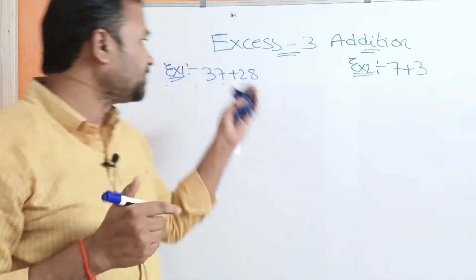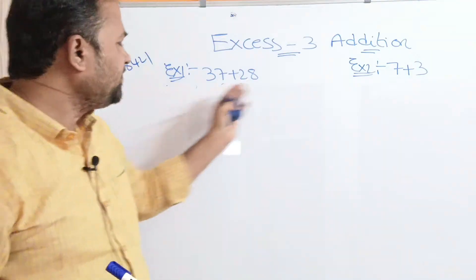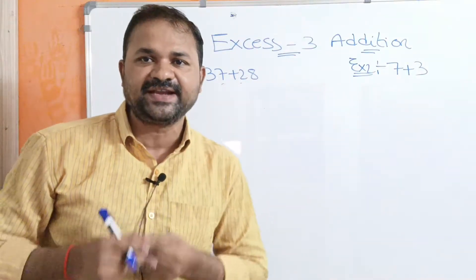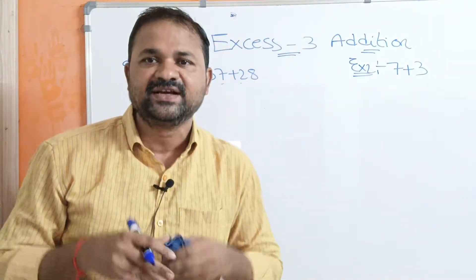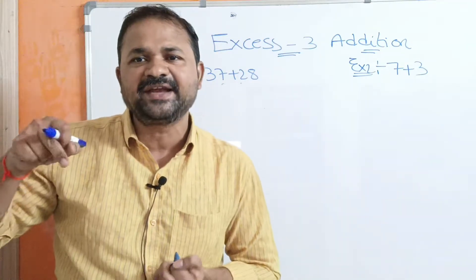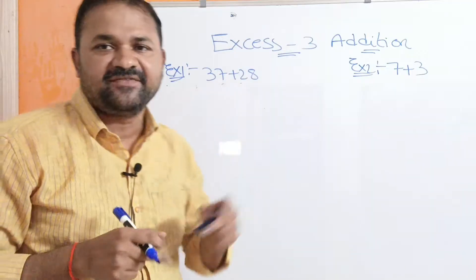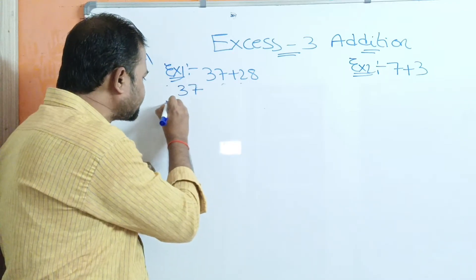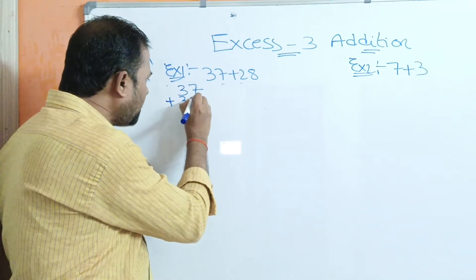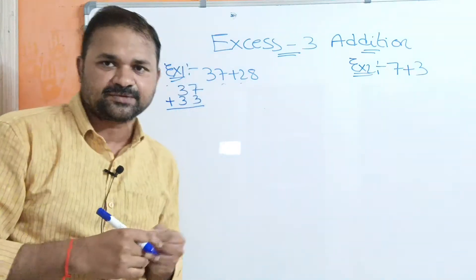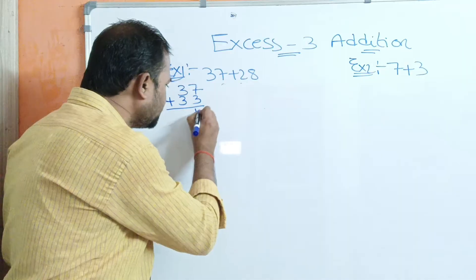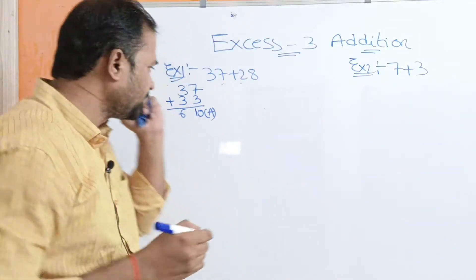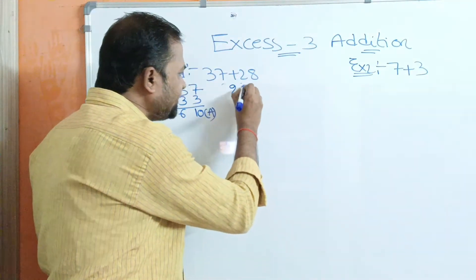Let us discuss XS3 addition. Here we have two examples. Let us solve the first example: 37 plus 28. The name itself specifies the meaning — we have to add an extra 3 to each and every decimal digit. The first number is 37, which has two digits: 3 and 7. So we add 3 to each digit. 7 plus 3 means 10, and 3 plus 3 means 6.